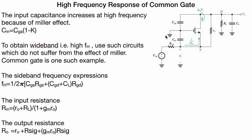To obtain wideband high frequency, we use circuits which do not suffer from the effect of Miller. Common gate is one such example. The sideband frequency is 1 over 2π.